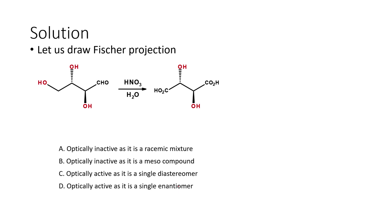Let us draw the Fischer projection for the final product. This is an oxidation reaction using a strong oxidizing agent — nitric acid — so this will oxidize both the hydroxy group and the aldehyde; both will be oxidized to the corresponding carboxylic acids. This oxidized product is answer step one: the oxidation leads to two carboxylic acids.